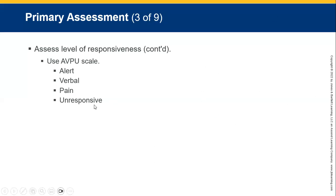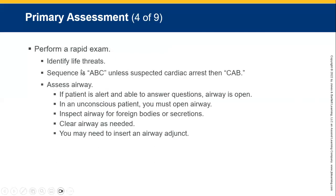Determine whether the patient is breathing or not. If the patient is breathing and has a pulse, put them in a recovery position and monitor while waiting for help. We can then do a secondary survey to determine what caused the unconsciousness in the first place.